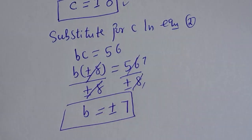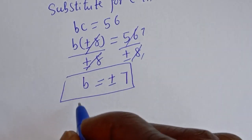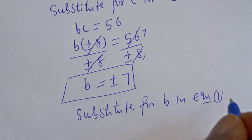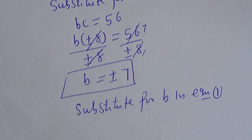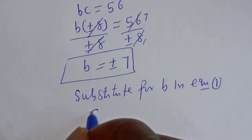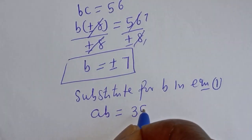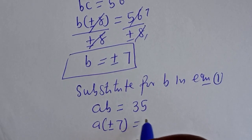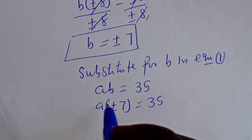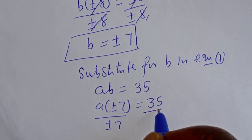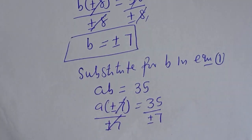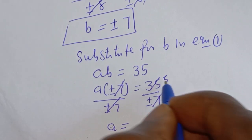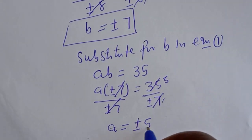Now we've gotten the value of B, so we can substitute for B in equation 1 to get the value of A. Equation 1 is AB equal to 35. B is plus or minus 7, so A multiplied by (plus or minus 7) is equal to 35. Dividing both sides by plus or minus 7 — this cancels — A is equal to plus or minus 5.